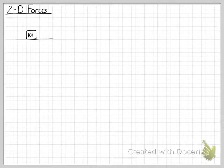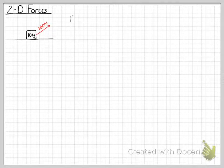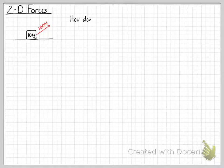This video is about two-dimensional forces, and we're going to start with an object being pulled by a rope at an angle. This object has 10 kilograms and it's going to be pulled with 100 newtons. The question is: how does the object accelerate?